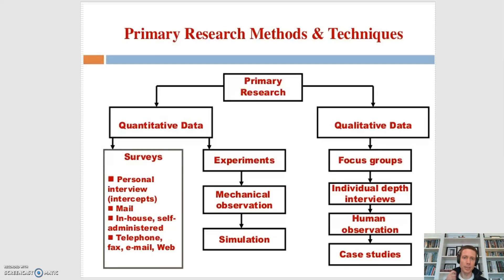Here are primary research methods and techniques. There are two main types of primary research: quantitative and qualitative. Examples of quantitative research studies include survey research, experimental designs, observations, and simulations. On the qualitative side, we're mostly dealing with words and observations as compared to quantitative numbers and data. Examples of qualitative studies are focus groups, interviews, observations, and case studies.